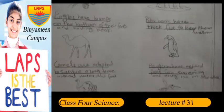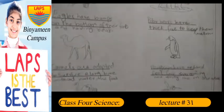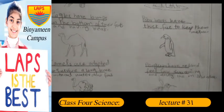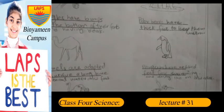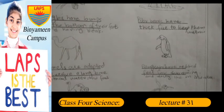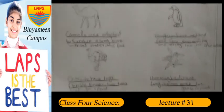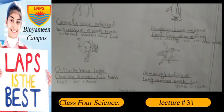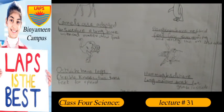Camels are adapted to survive a long time without water and food. Penguins have webbed feet for swimming and mostly live in cold areas.